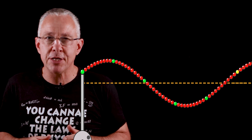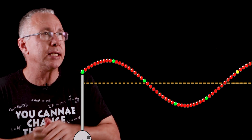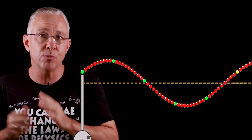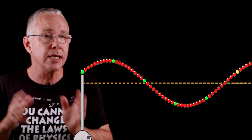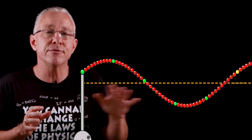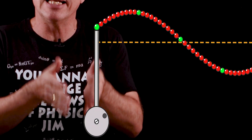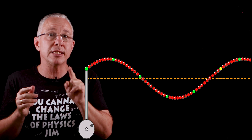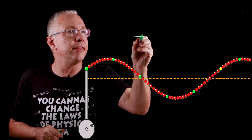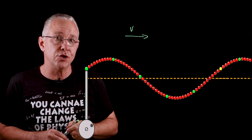Here I have an animation courtesy of FET, which is a fantastic website I encourage you to have a look at, showing a transverse wave. A wave is basically a disturbance that causes a transfer of energy. Here we have our piston going up and down as our vibration. You'll notice that there is a wave moving from left to right, so it has a velocity associated with it.